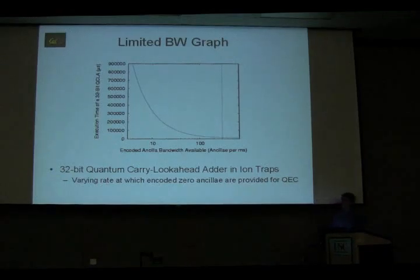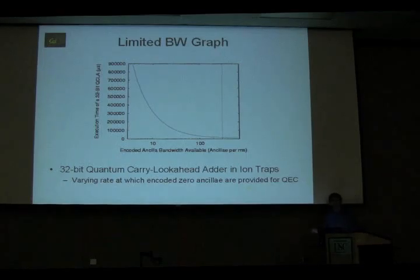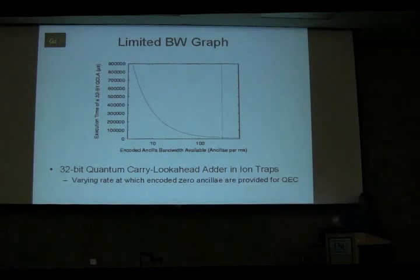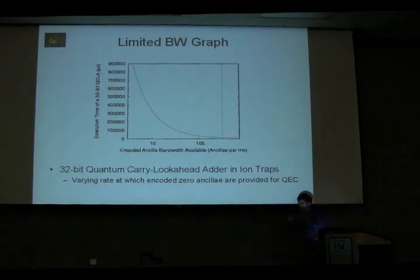This is nice, but if we take a look at one moment in time — a vertical line — all those ancilla preps that are happening are happening in parallel, and that means that each one needs separate hardware. So the more parallelism you have, the more hardware you have, and the bigger layout you have. So we have this time-hardware trade-off.